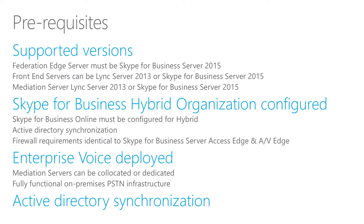Now let's look at planning, starting with prerequisites. Your on-premises environment must meet supported version requirements. The federation edge server must be Skype for Business Server 2015 — if it's still Lync Server 2013 or older, you'll need to upgrade it. Front-end servers can be Lync Server 2013 or Skype for Business Server 2015, and mediation servers likewise. Please note there are minimum cumulative update (CU) patch level requirements for Lync Server. In general, we recommend running the latest CU version.